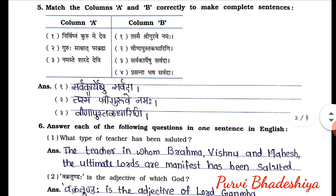Exercise number five: match column A and B correctly to make a complete sentence. In column A, half sentences are given which we have to match with column B. First one: Nirvidnam Kurume Deva — matched with column B third statement — Sarvakaryesu Sarvada. So: Nirvidnam Kurume Deva Sarvakaryesu Sarvada. Second one: Guru-ha-shakshat-parap-brahma — matched with column B first statement — Tasme Shri-gurue-namaha.